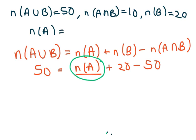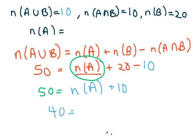So this is going to give me 50 equals... why is this 10? Did I write this down wrong? This should be 10, sorry. So minus 10. So when I do this, I'm going to get 50 equals the number in A plus 10, so 40 is my number of elements in set A.